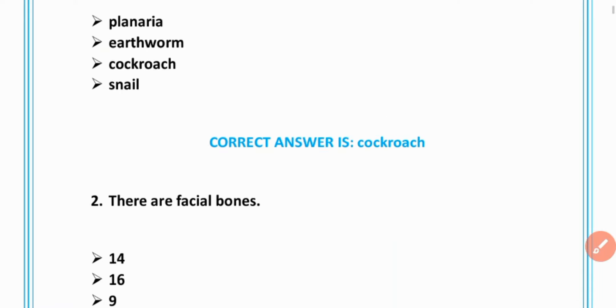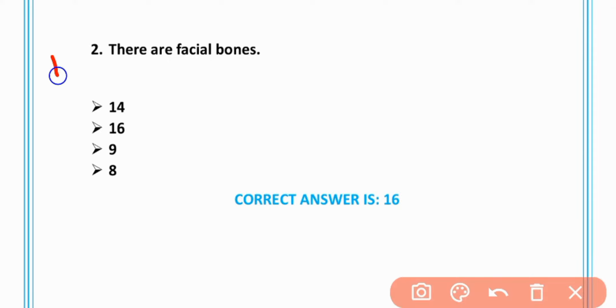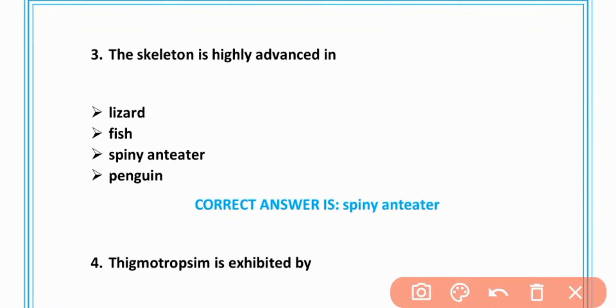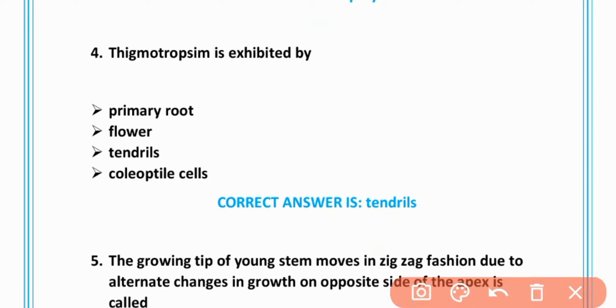MCQ number 2: There are 16 facial bones. MCQ number 3: The skeleton is highly advanced in spiny anteater, option C is correct.